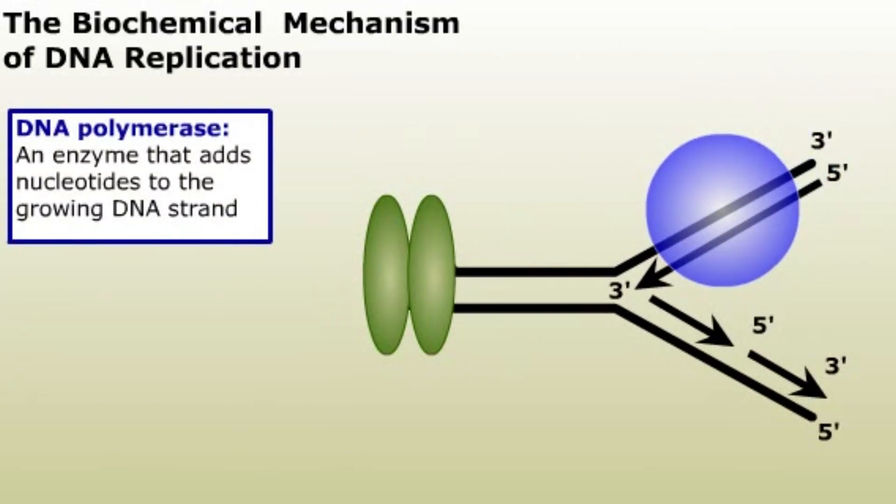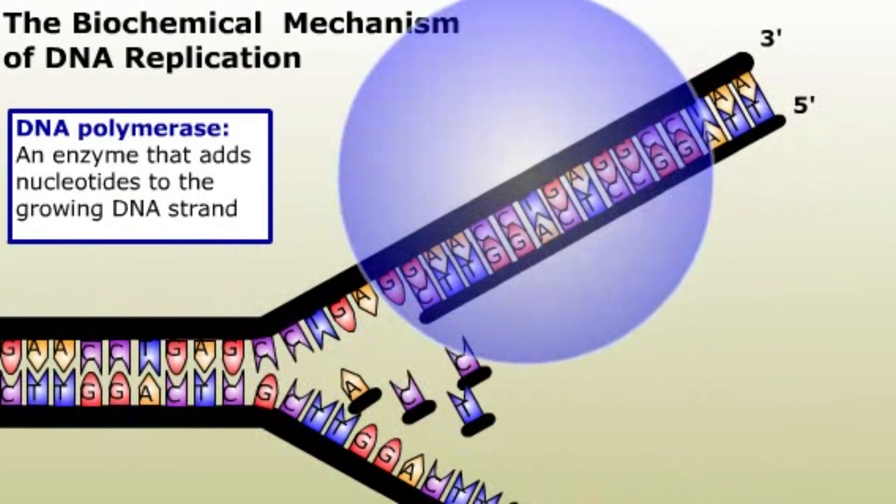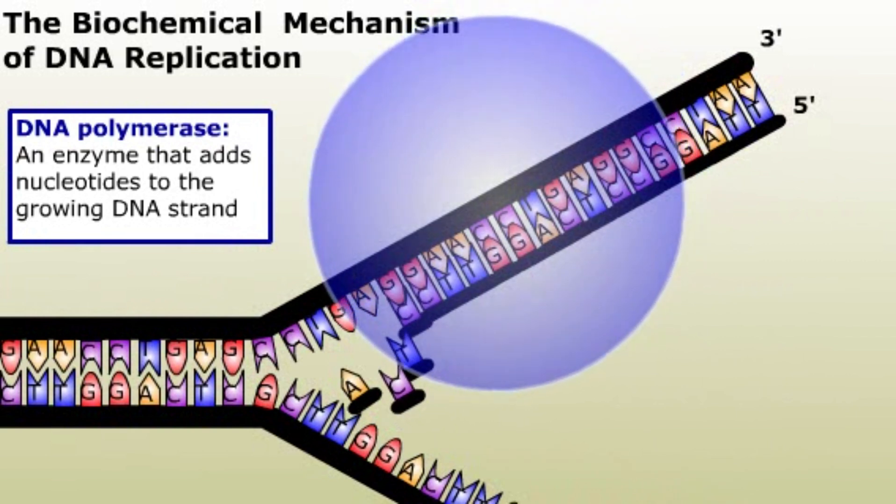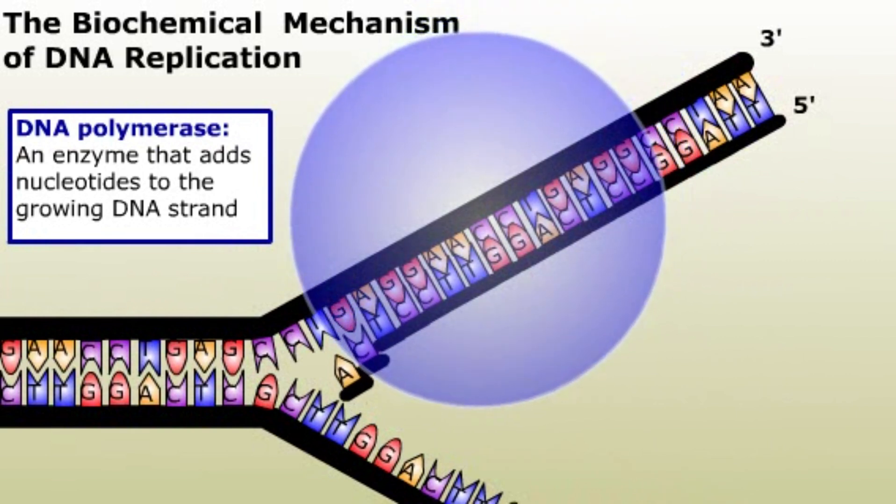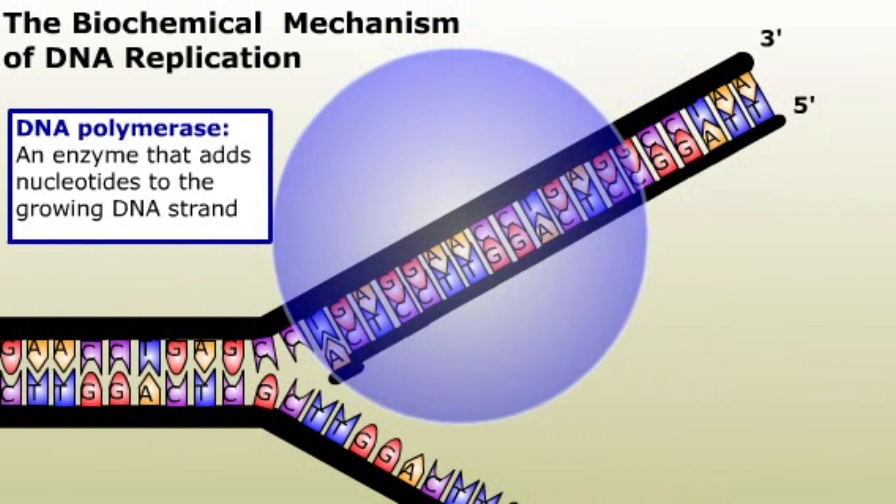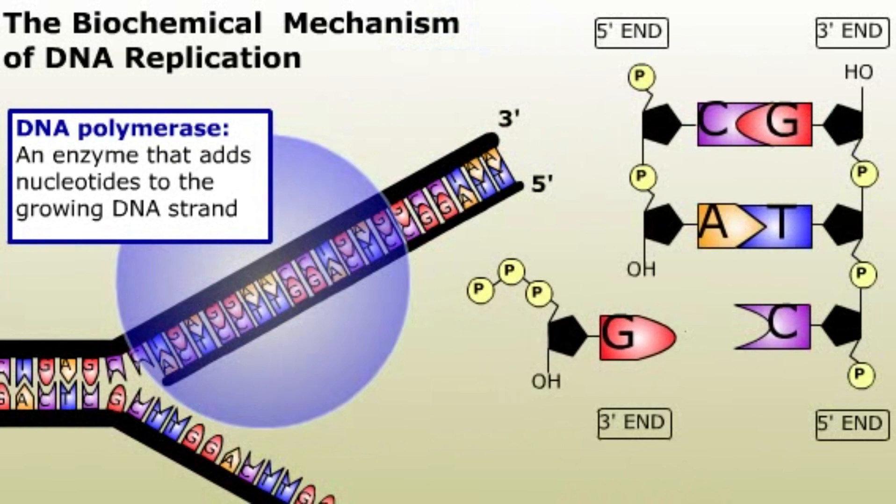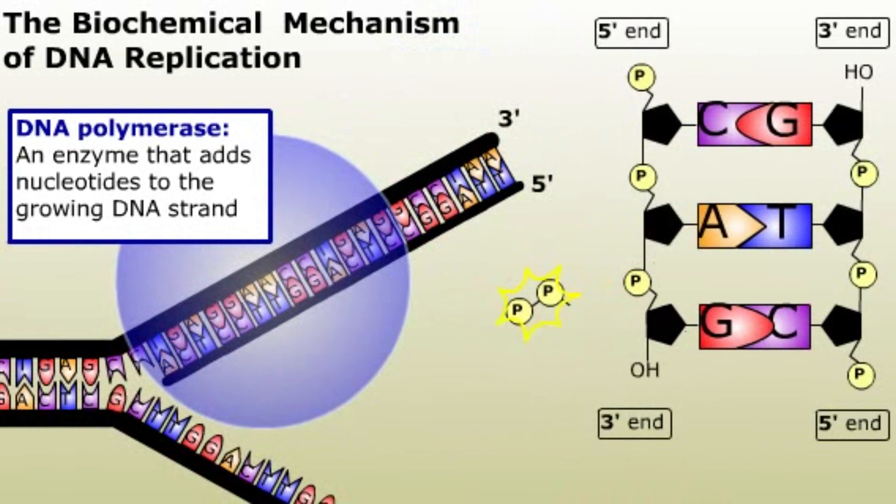Enzymes called DNA polymerases add the nucleotides to the growing DNA strand. Nucleotides align with their complementary bases one at a time on the template DNA once DNA polymerase is bound. As each monomer unit is added to the strand, two phosphate groups are released. The energy released in this reaction drives DNA synthesis.